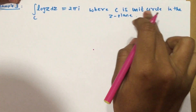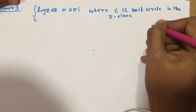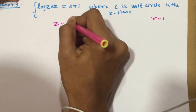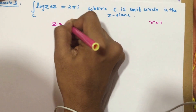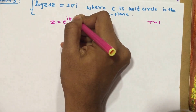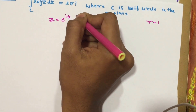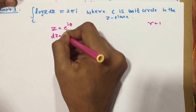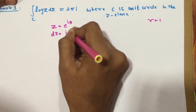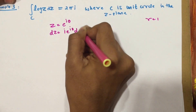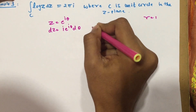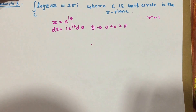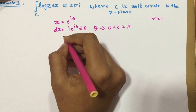Since it's a unit circle, r = 1, so z = e^(iθ) directly. As always, dz = i·e^(iθ)·dθ, and θ varies from 0 to 2π because it's a full circle.